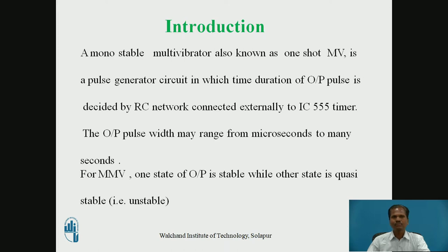The output pulse width may range from microseconds to many seconds or minutes. For a monostable multivibrator, one state of output is stable while the other state is quasi-stable, or unstable, or temporarily stable. The stable state equals a low voltage level and quasi-stable equals high voltage level, or it may be reverse.